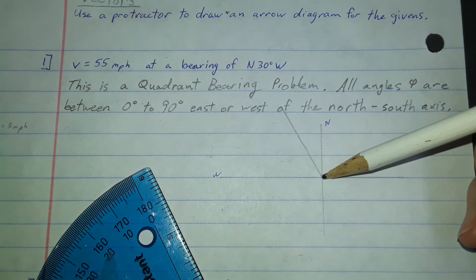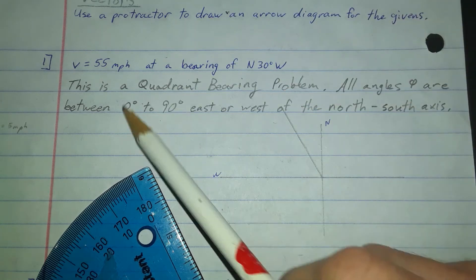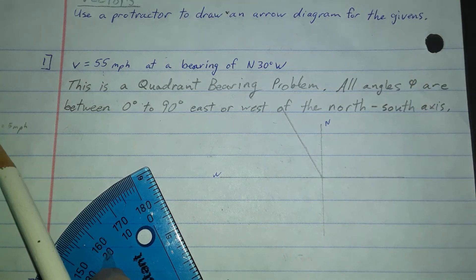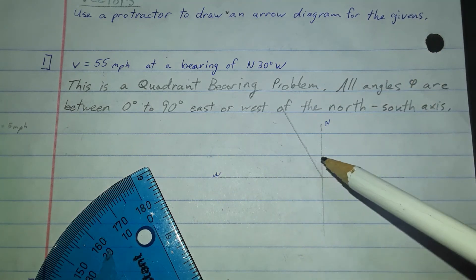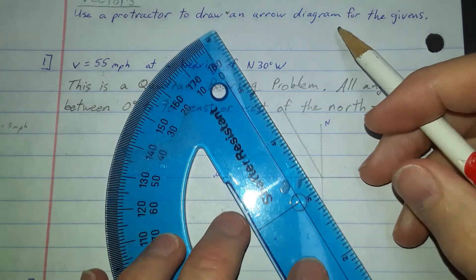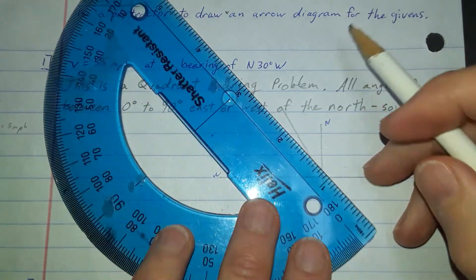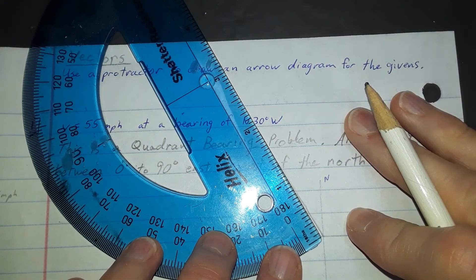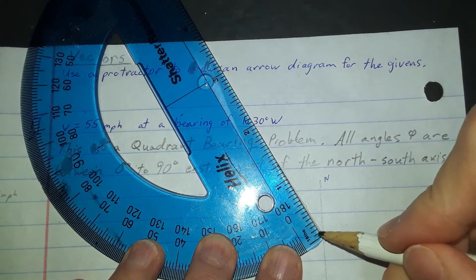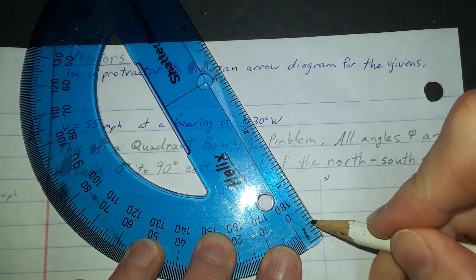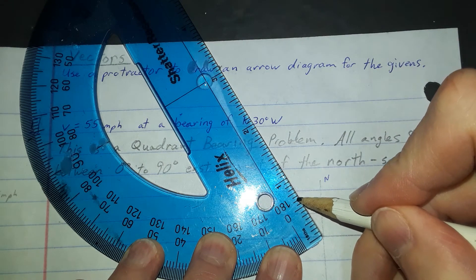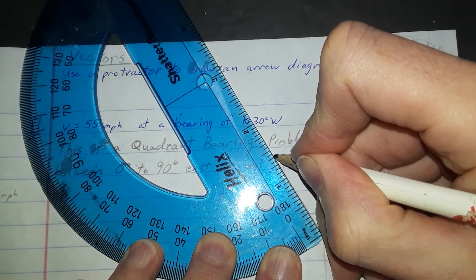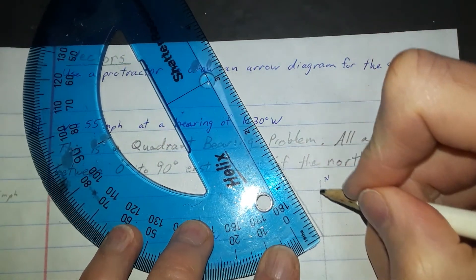Now I need this length to represent the 55 miles per hour. I said the scale that I want to use is an eighth of an inch equals five miles per hour. I'm going to measure every eighth of an inch represents five miles per hour. Counting 5, 10, 15, 20, 25, 30, 35, 40, 45, 50, 55. Right here is going to give me that.